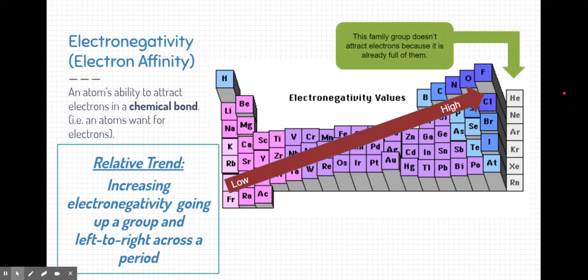This trend as well is influenced by the octet rule. Now, one thing to note, if you look on the very right, there's a special family called the noble gases, and we'll learn a little bit more about element families. But this family doesn't attract electrons anymore because it's already full of them. It's reached its potential, which is one of the reasons why they call it the noble gas family.